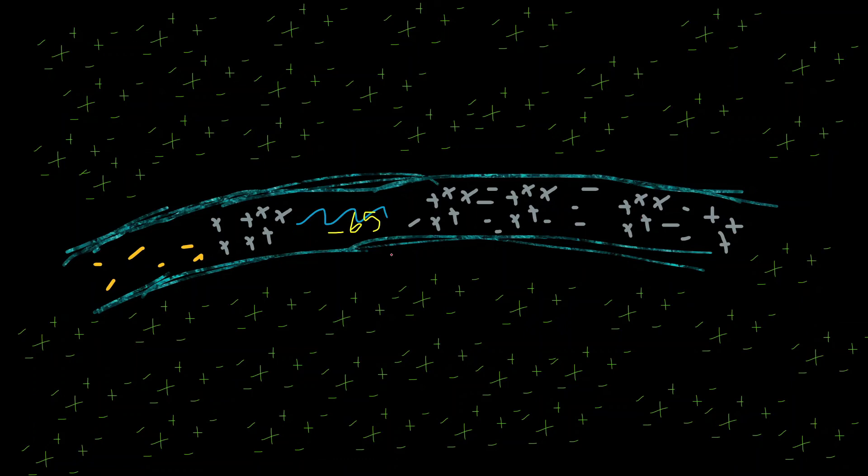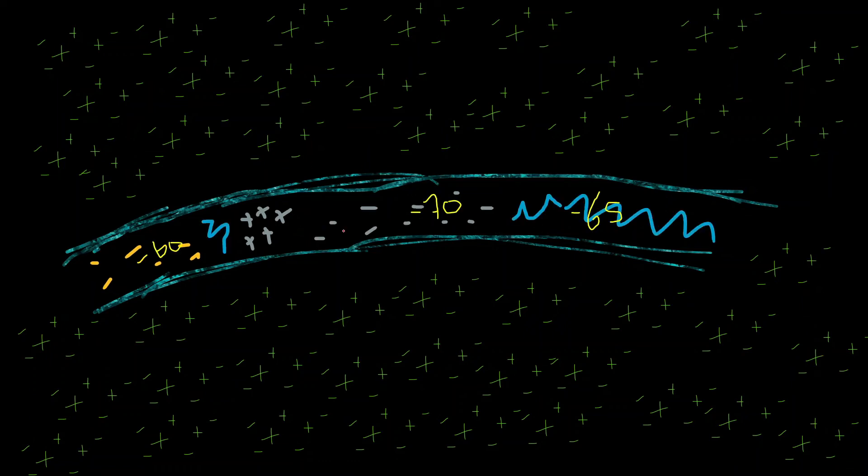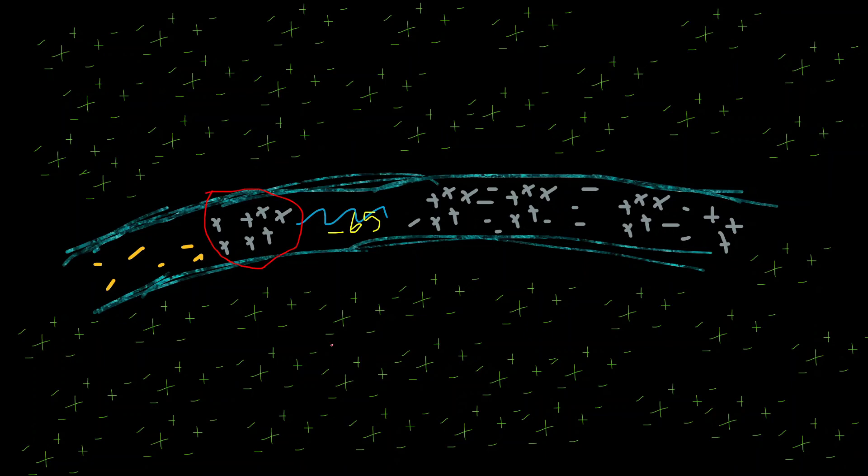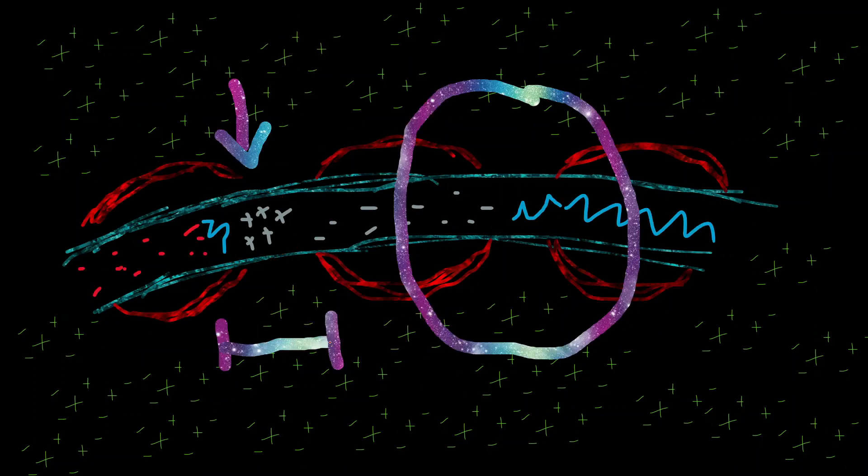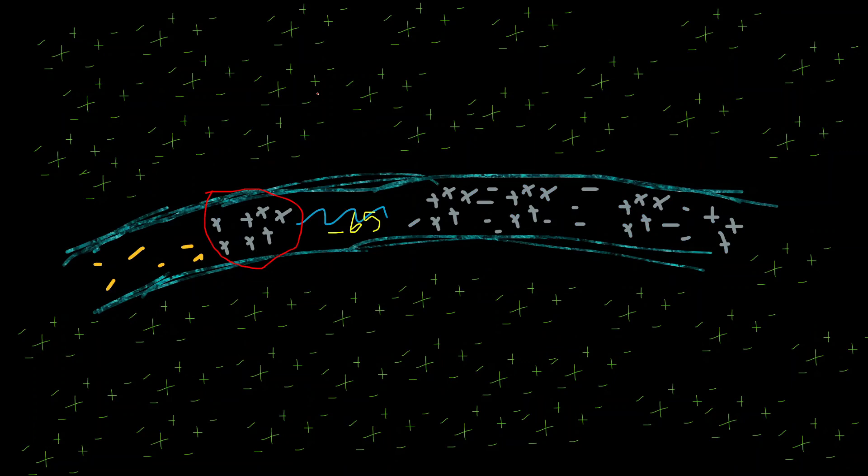And so really the only region of the cell that would be negative enough to begin the action potential would be the region immediately adjacent to where the action potential currently is anyway. And so by removing the myelin sheets, we have shortened the distance that the action potential can reasonably jump.